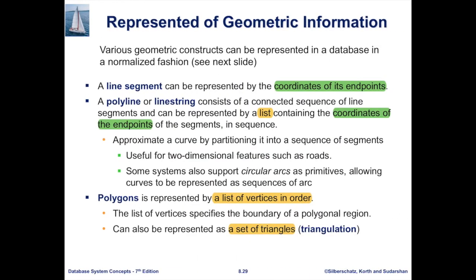At the lower level, we have line segments represented using two endpoints. We have a polyline or line string — sometimes used to represent roads — which is just a list of coordinates of endpoints, or a list of line segments. We also have polygons, represented by an ordered list of vertices. Polygons can also be represented as a set of triangles, and those triangles can be represented as a set of line segments.